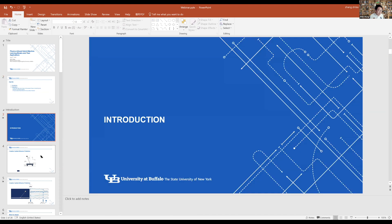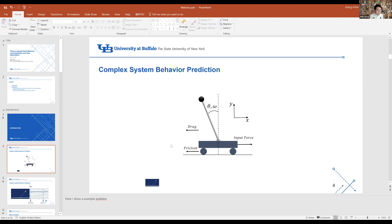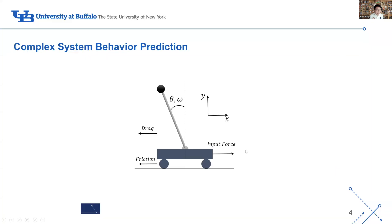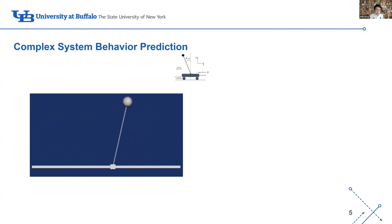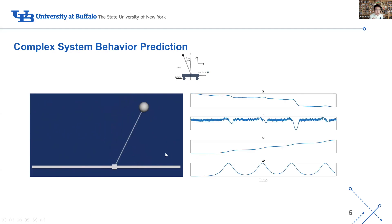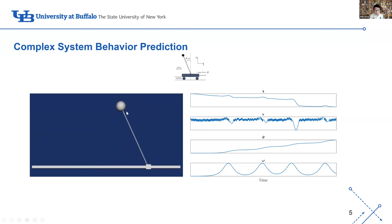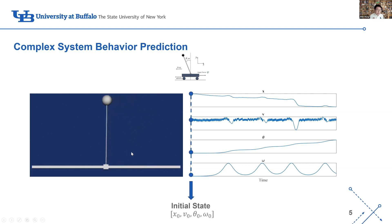As Dr. Rai introduced the hybrid model, maybe you don't have a very detailed sense of what it is. I want to start from a very simple problem: an inverted pendulum with drag and friction. We have x, which is the position of the pendulum, the velocity, theta — the angle of the pendulum — and omega, which is the angular velocity. We want to model this problem.